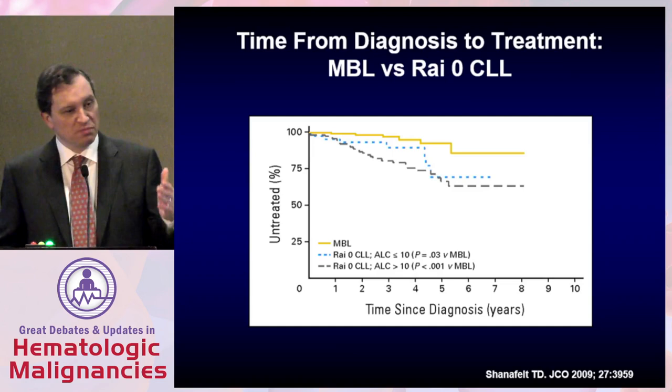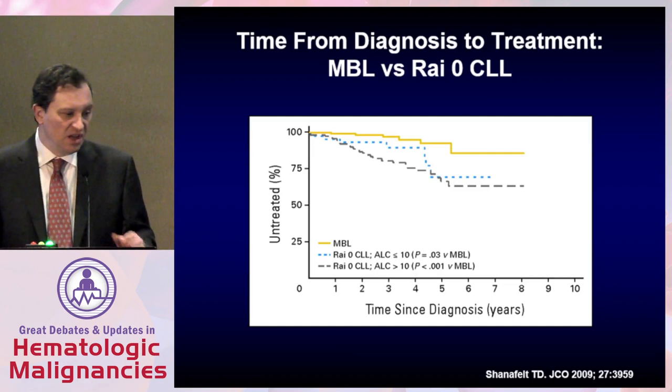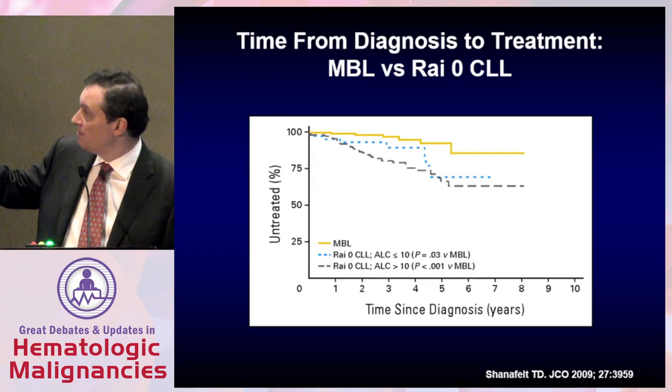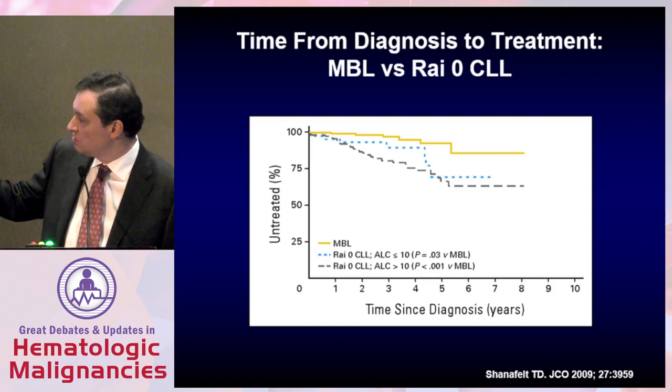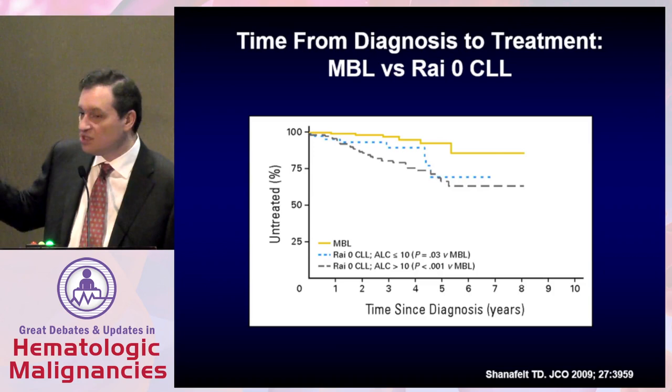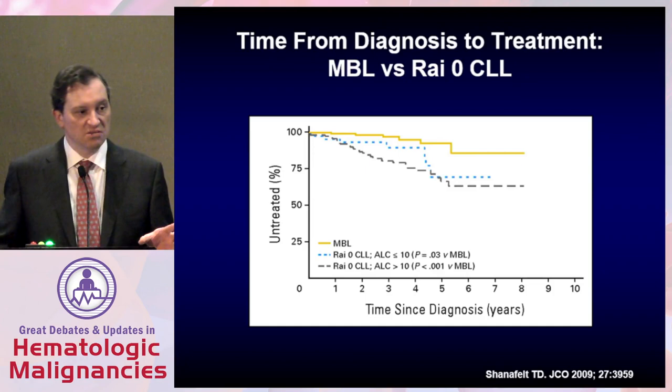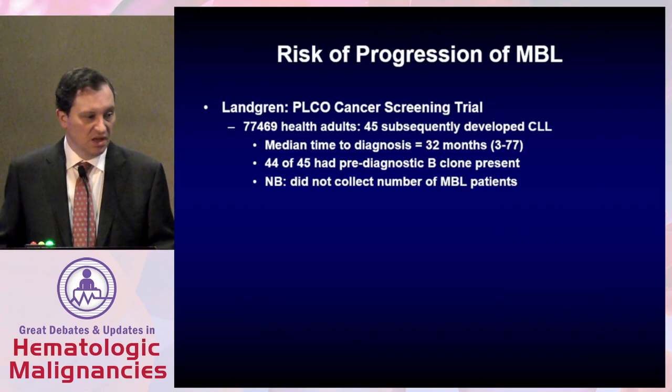Moving on to progression from MBL to CLL: data from Tait Shanafelt show that the white blood count really becomes the most important predictor. Looking at progression to treatment, the yellow line represents MBL, then low white count CLL, then high white count CLL. In essence, MBL really is a different population with a different prognosis. Characterizing someone as having MBL as distinct from low-count CLL really does have implications for their time to treatment.